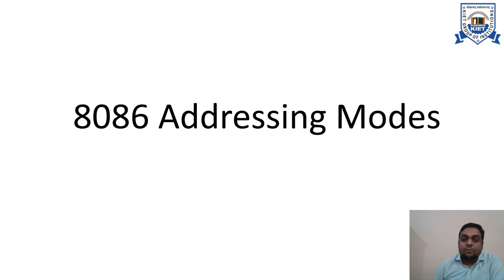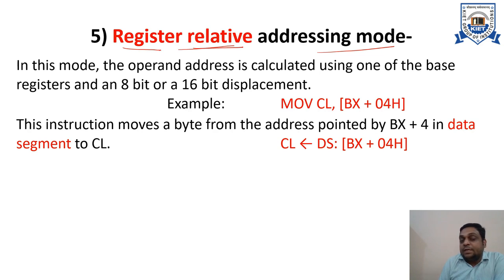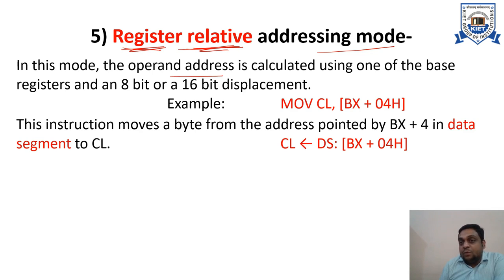Hello everyone. This is 8086 addressing modes part two. We have discussed the first four addressing modes in part one. Now we are starting with the fifth addressing mode, that is register relative addressing mode. As its name suggests, register relative means the mechanism is related to a register — the operand address or effective address is calculated using one of the base registers.